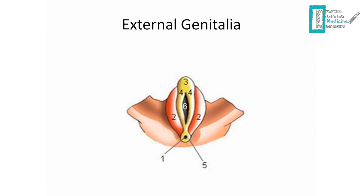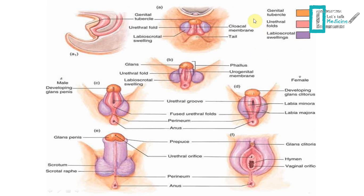Now let's talk about external genitalia. Number 2 is the labioscrotal swelling — from the name you can tell it gives us either the labia majora in females or the scrotum in males. Number 4 is the urogenital folds, with number 6 being the opening of the urogenital sinus. The urogenital folds give us either the labia minora in females, or they fuse to form the ventral part of the penis and most of the penile urethra in males. Number 3 is the genital tubercle — associate it with the word 'glans': it gives either the glans penis or the glans clitoris.